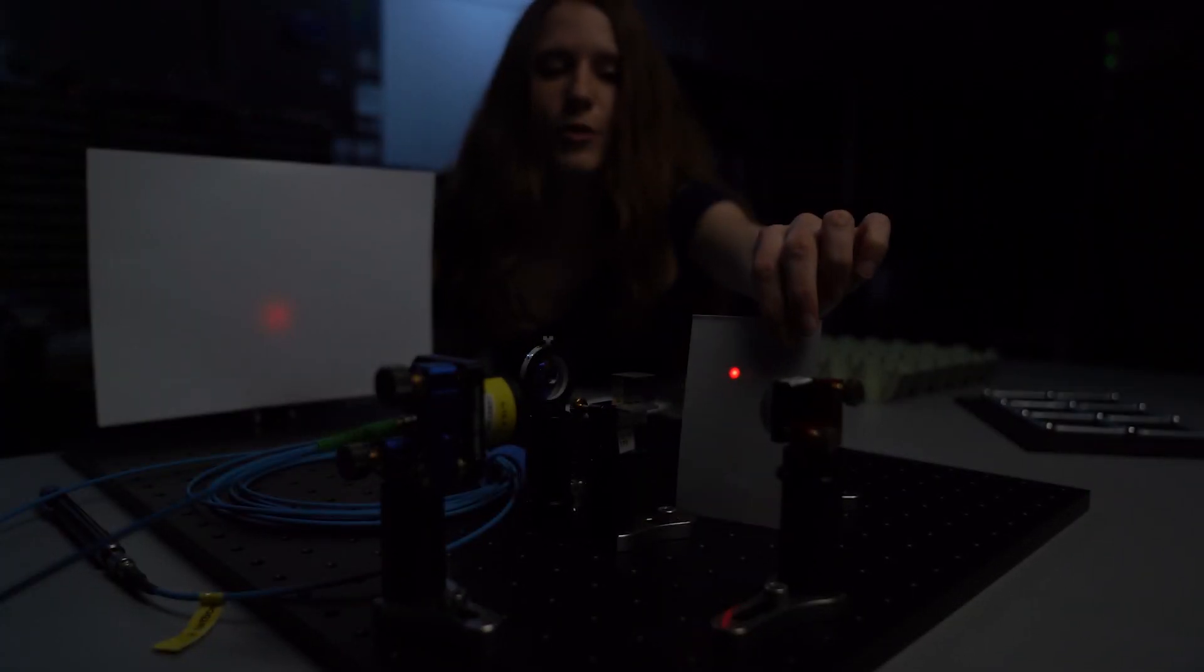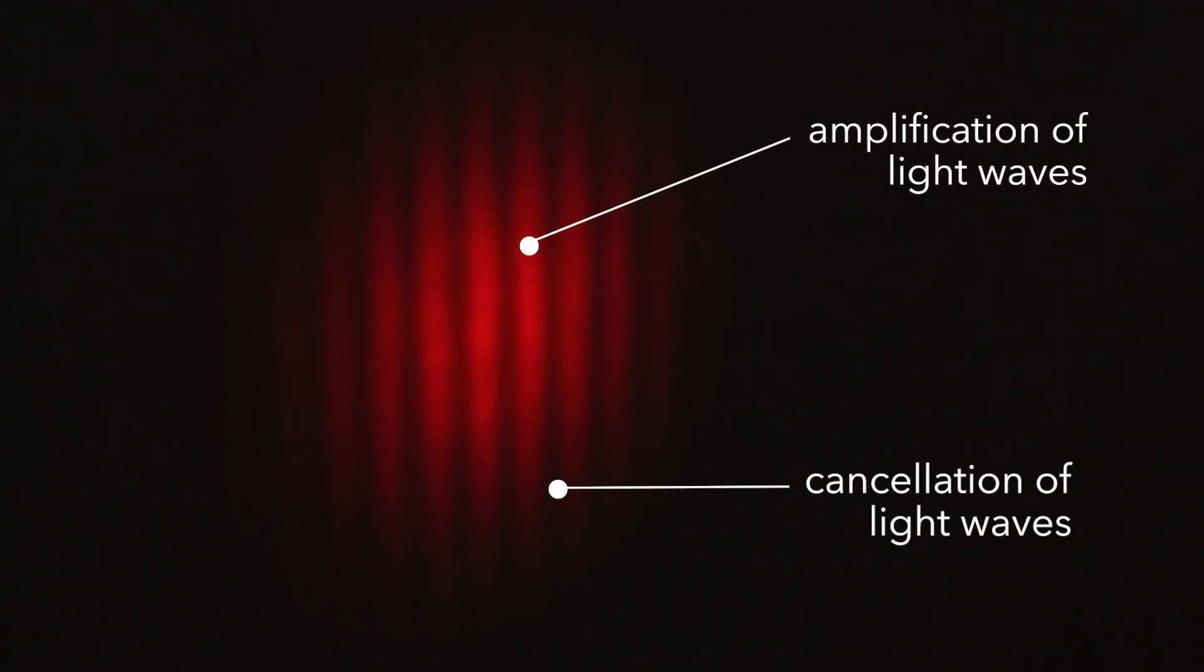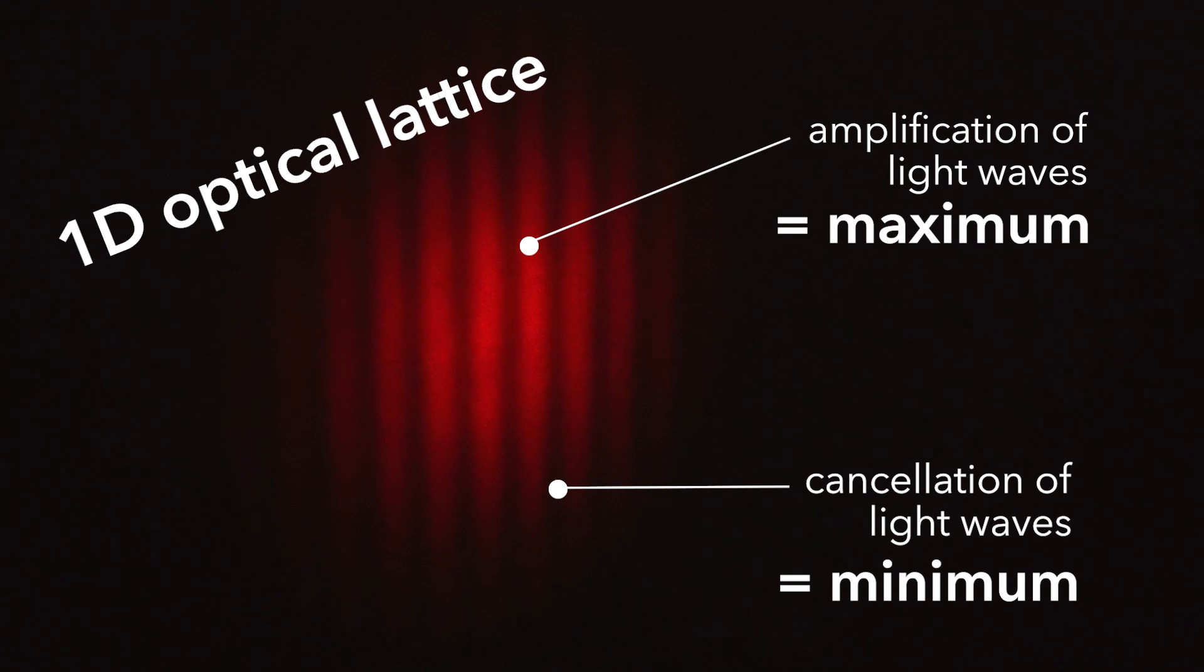And now if I put both of them together we can see that we now get this stripe pattern. So at some points the two light waves amplify and at some other points they cancel each other out. So we get this regular arrangement of minima and maxima which we call a one-dimensional optical lattice. So this would effectively mimic a one-dimensional crystal.